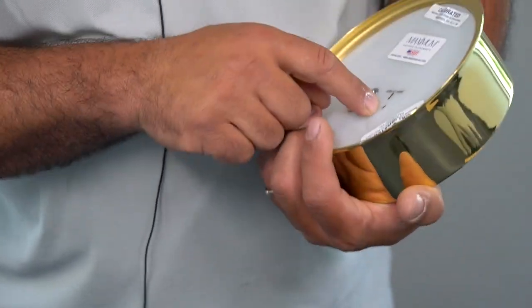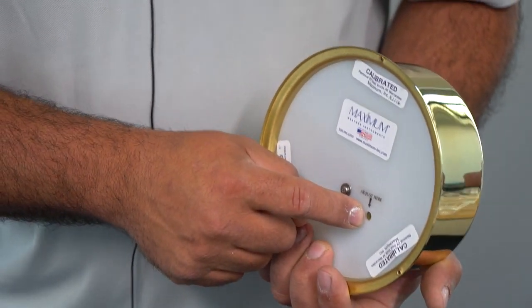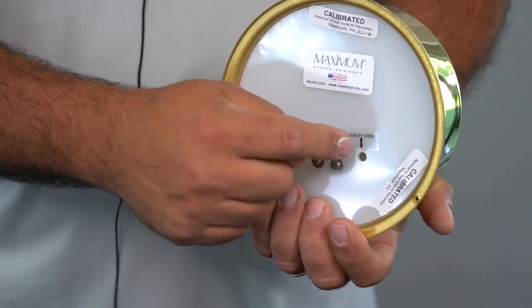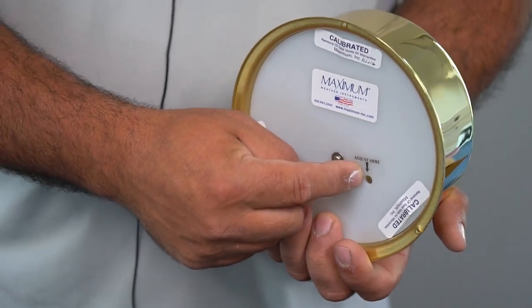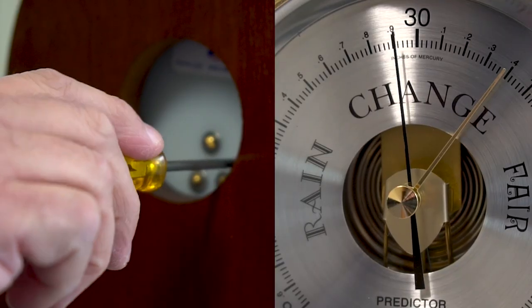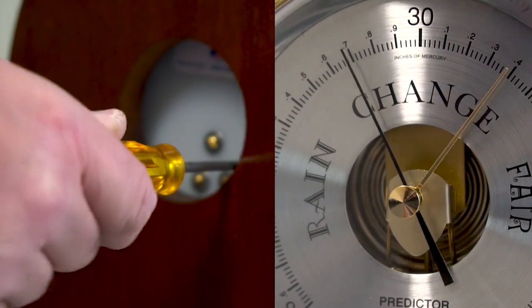We will locate the adjustment opening. Inside the opening, there is a small standard screw where we will insert a screwdriver and turn the screw until the pointer is located at the current pressure.